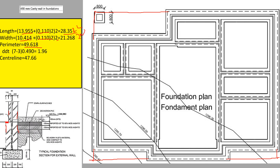We take the external perimeter and deduct the number of corners times the thickness of the wall. The number of external corners is seven; we deduct three internal corners, giving four. We multiply four by the thickness 0.490 to get 1.96. Taking the external perimeter of 49.618 and deducting 1.96, we get 47.66. That is the center line for the foundation wall, which is a 490 mm cavity wall.